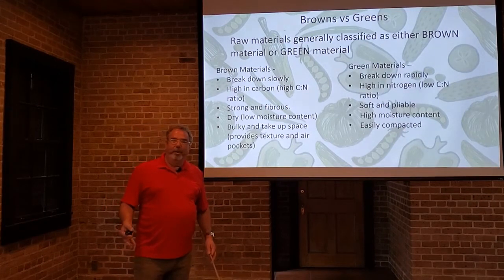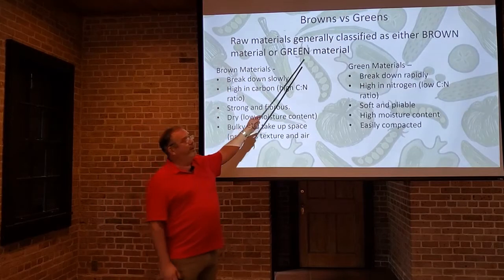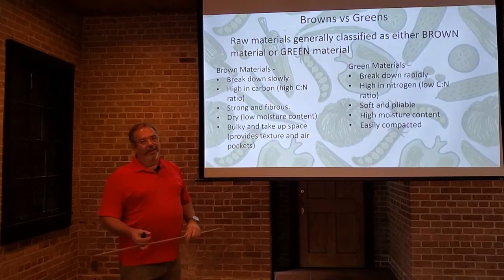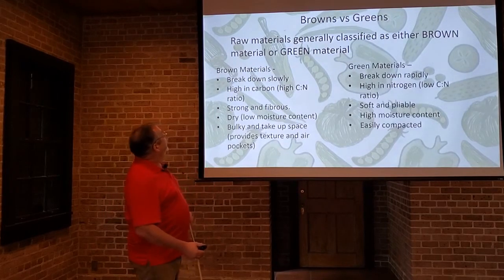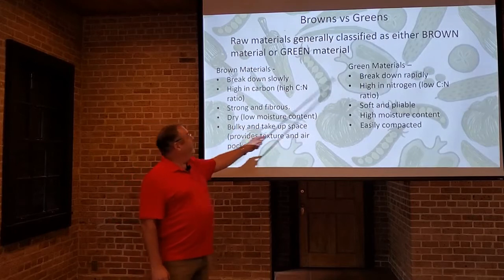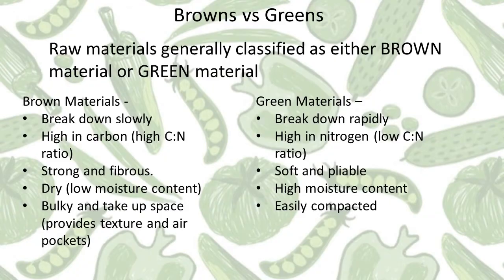When we talk about things to put in our compost, you're going to see the classification of browns versus greens a lot. That doesn't necessarily mean they have to be those colors, but frequently it is. Brown materials break down more slowly. They are higher in carbon, so they have a high carbon-to-nitrogen ratio. They are typically strong and fibrous, frequently dry — the leaf itself is a dry material once it's fallen from the tree. They are also typically bulky, taking up a lot of space, but they provide texture and air pockets.